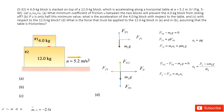The first question asks: what is the minimum coefficient of friction to prevent number one from moving relative to number two? For that, they must keep the same acceleration, meaning A1 equals 5.2 m/s². Using the equation acceleration equals mu times g, we get mu equals 5.2 divided by 9.8 — that gives us the answer, approximately 0.53.